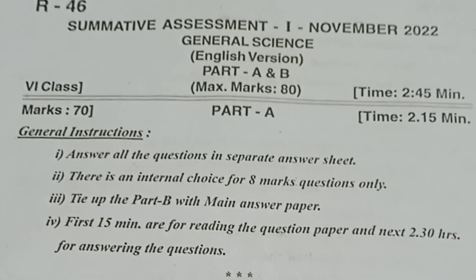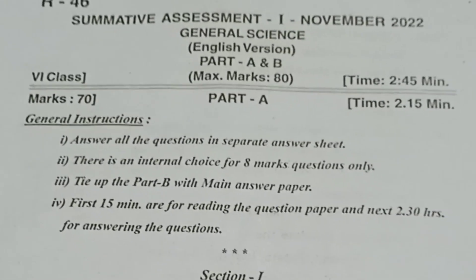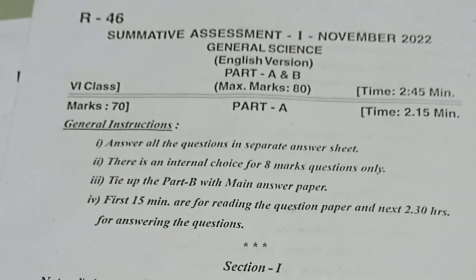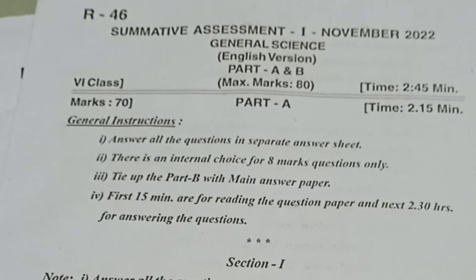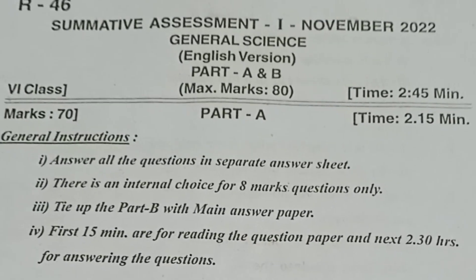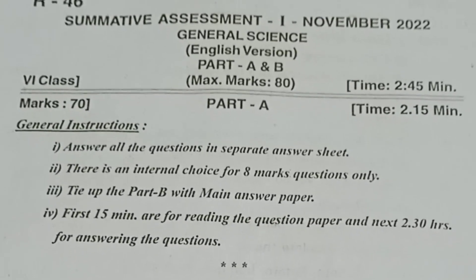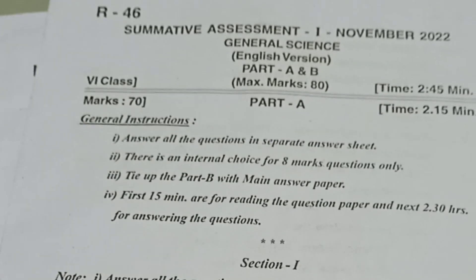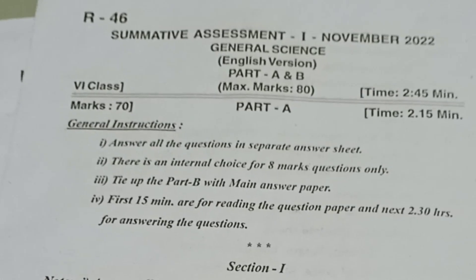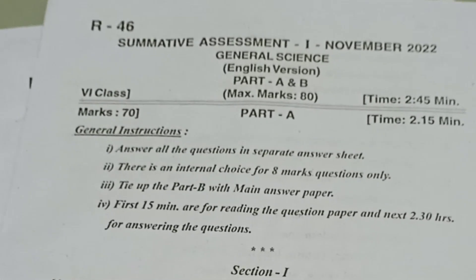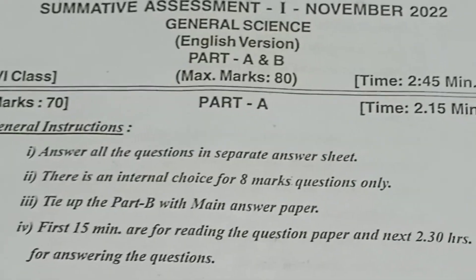Summative Assessment 1, November 2022 — General Science, English Version. Part A and B: 80 marks total. Part A: 70 marks. General instructions: timing allotted is 2 hours 15 minutes. First instruction: answer all the questions.